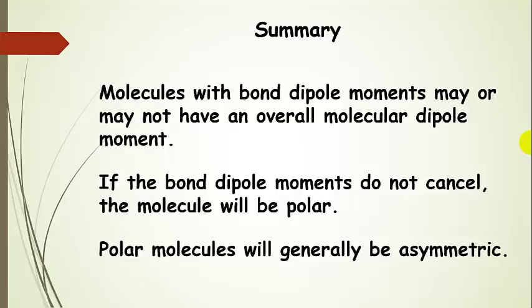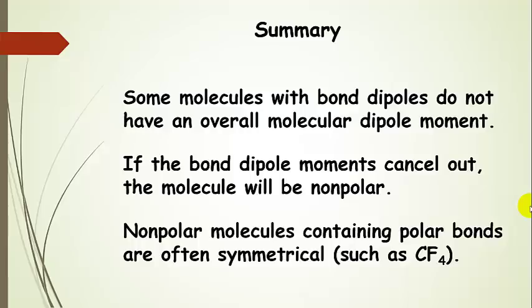In summary, molecules with bond dipole moments may or may not have an overall molecular dipole. You have to draw the molecule using VSEPR, add all the bond dipoles, and check whether they cancel. If the bond dipole moments don't cancel, the molecule is polar — and generally these molecules will be asymmetric. Some molecules with bond dipoles do not have an overall molecular dipole moment; carbon tetrafluoride is an example, where all bonds are the same, the molecule is symmetrical, and all bond dipole moments cancel. More whiteboard examples will be posted to practice determining overall molecular dipole moment — whether a molecule is polar or not.